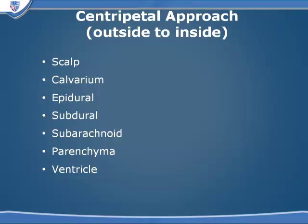We're going to take a centripetal approach in analyzing our cross-sectional images. We're going to look at each layer in turn, starting with the scalp, then looking at the calvarium, the potential epidural and subdural spaces, mention briefly the subarachnoid space, and then finish talking about the parenchyma and ventricular hemorrhage.